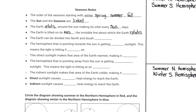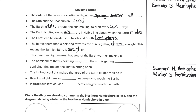The earth can be divided into northern and southern hemispheres. The hemisphere — whether it's the north or the south — that is pointing towards the sun is getting direct sunlight. It gets a lot more intense sunlight that heats it up, and this means that the sunlight is also hitting it straight on. Because that sunlight is hitting straight on, that hemisphere gets much warmer, causing it to be summer.